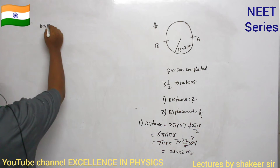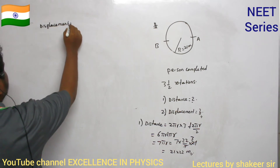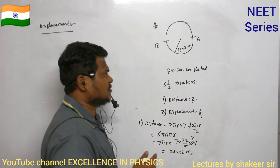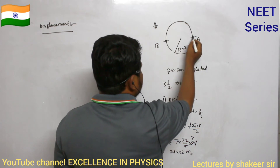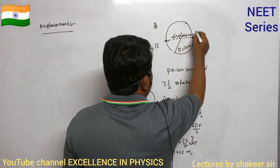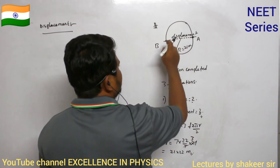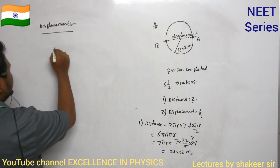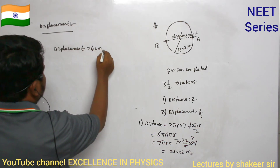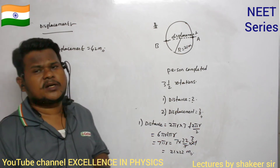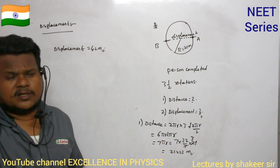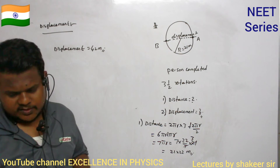Displacement is the straight-line distance between the initial point A and the final point B. Since B is diametrically opposite to A, the displacement equals the diameter = r + r = 2r = 2 × 21 = 42 meters. We are not concerned about how many rotations were made — only the straight-line distance between initial and final positions.